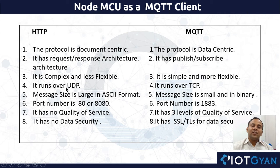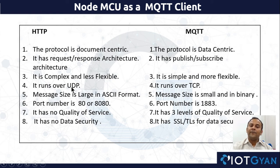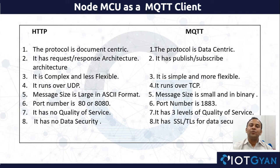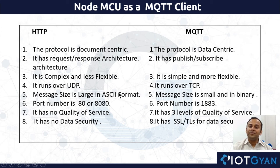HTTP runs on UDP, which is a connectionless protocol. But MQTT runs on TCP, which is a connection oriented service. In HTTP, the message size is large in ASCII format — to send only two bytes of data such as temperature or humidity, like 25 degrees Celsius, you need to send a total header of 330 bytes. So the header cost in HTTP is expensive because it contains lots of headers. But in MQTT, the overhead is one-eighth to one-tenth of the data compared to HTTP.